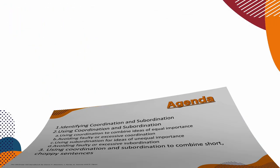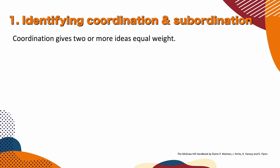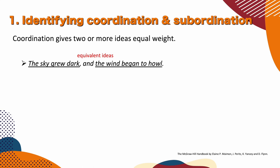Let's start with the first topic: identifying coordination and subordination. Coordination gives two or more ideas equal weight. For example, we have the sentence: 'The sky grew dark, and the wind began to howl.' We have a coordinating conjunction right here — can you see it? That is AND.